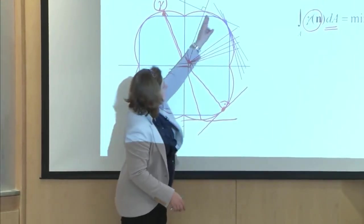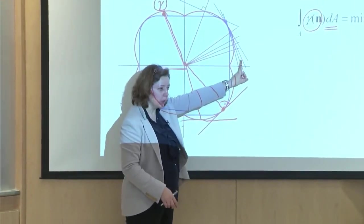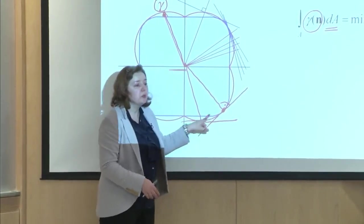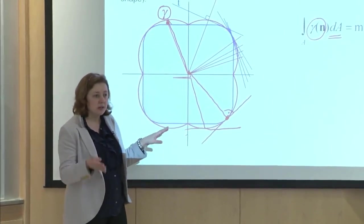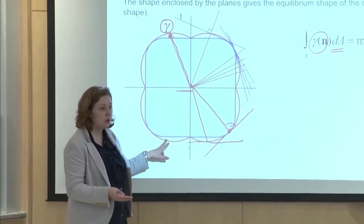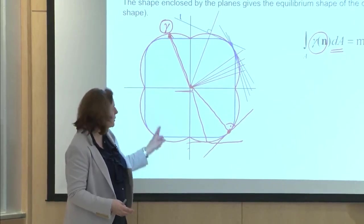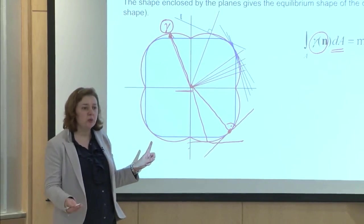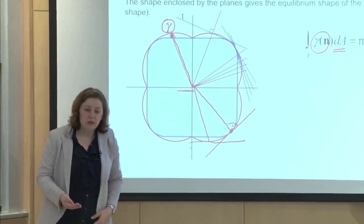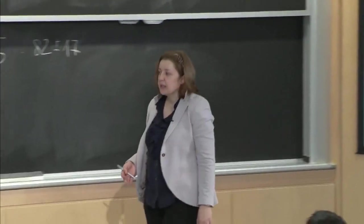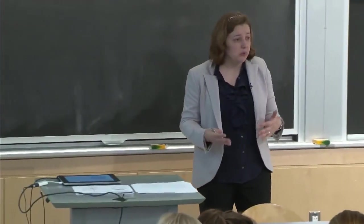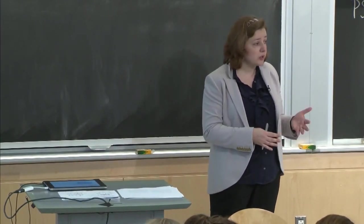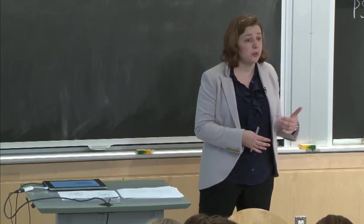The tangent lines you plot, now indicated in blue, will outline a shape. There will be an internal shape which is the equilibrium shape for that given crystal. You started with the red curve telling you the surface energy, and by this construction the blue outline tells you what will be the equilibrium shape of that crystal. If you know the surface energies, you can predict how the crystal will look when you grow that material.